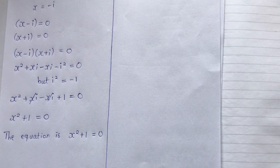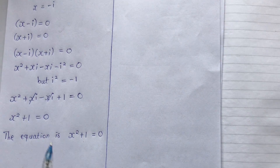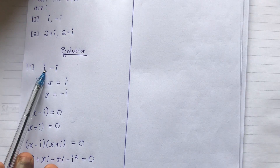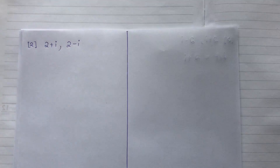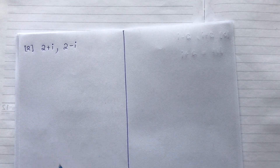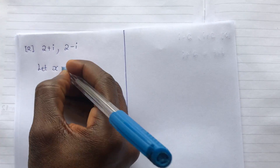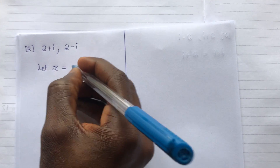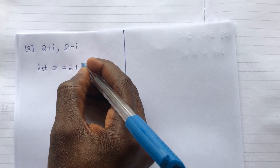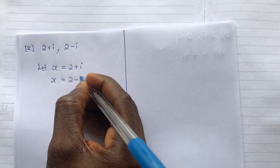So the equation is x squared plus one equals zero. This is the equation — when you solve it, it will generate the roots i and negative i. Now let's take the final example. In example two, let's use the same variable x.